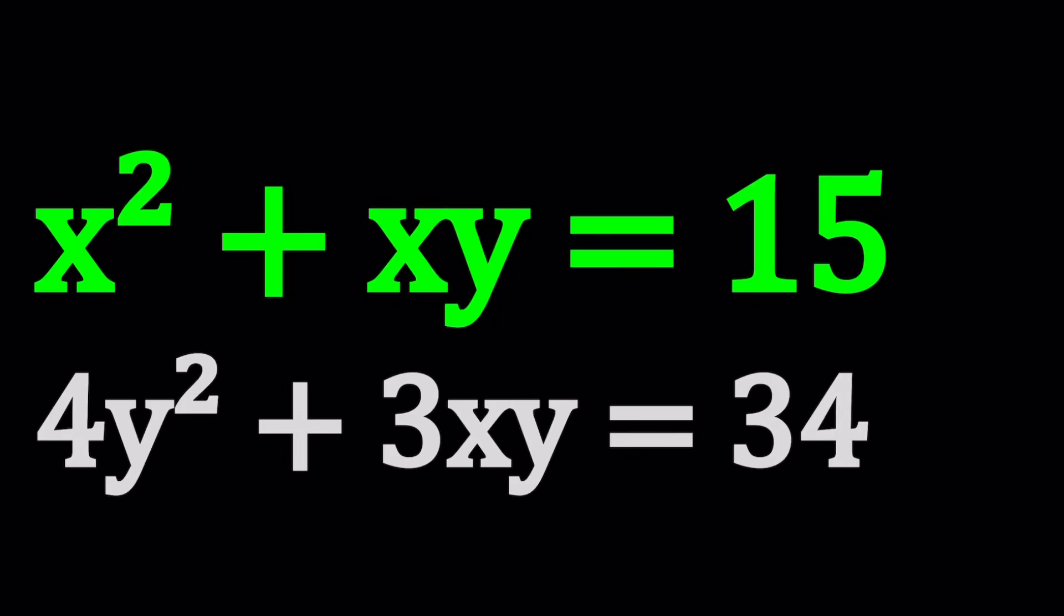Hello everyone. In this video, we're going to be solving a nice polynomial system. We have x² + xy = 15, and 4y² + 3xy = 34. And we're going to be solving for x and y values.